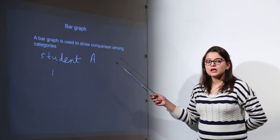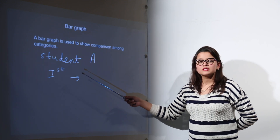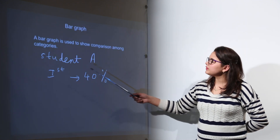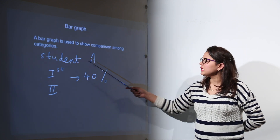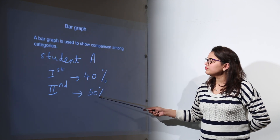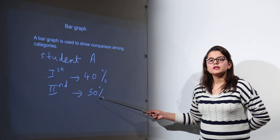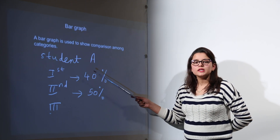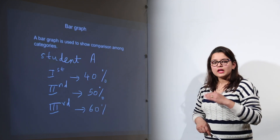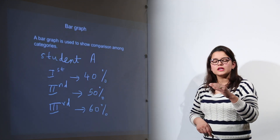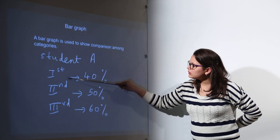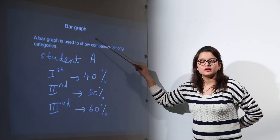I have taken up student A, whose first term marks, second term marks, and third term marks will be given to me. The first term marks for student A were 40%. For the second term, student A secured 50% marks, and in his third term, student A secured 60% marks. These are the values given for student A's marks in different terms.